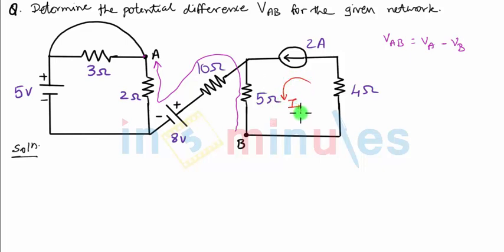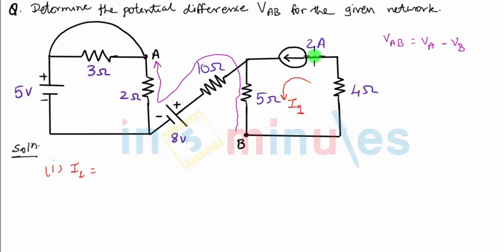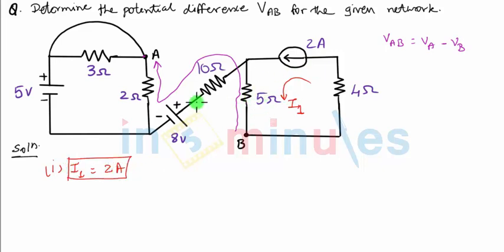Let me define the current through the 5 ohm resistance as I1, flowing in the downward direction. It is very simple to find I1, because there is a current source in this branch. The current source direction and the I1 direction are exactly the same, so I1 is equal to 2 amperes. We have now found the current through the 5 ohm resistance.